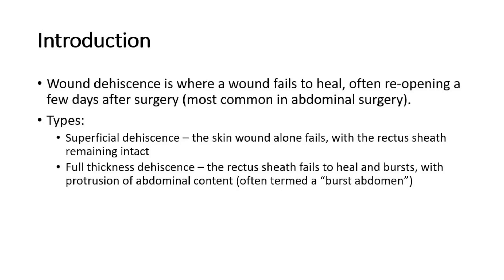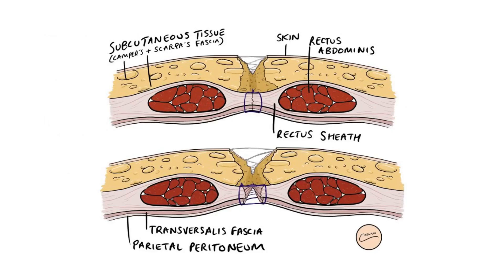There are two types: superficial and full thickness dehiscence. In superficial dehiscence, the skin wound alone fails, with the rectus sheath remaining intact. Whereas in full thickness dehiscence, the rectus sheath fails to heal and bursts, with protrusion of abdominal content.